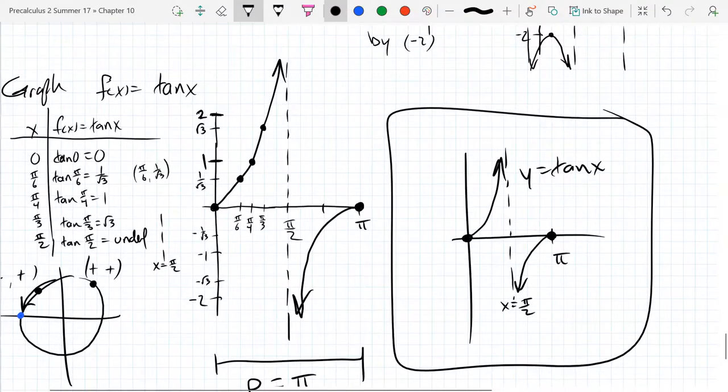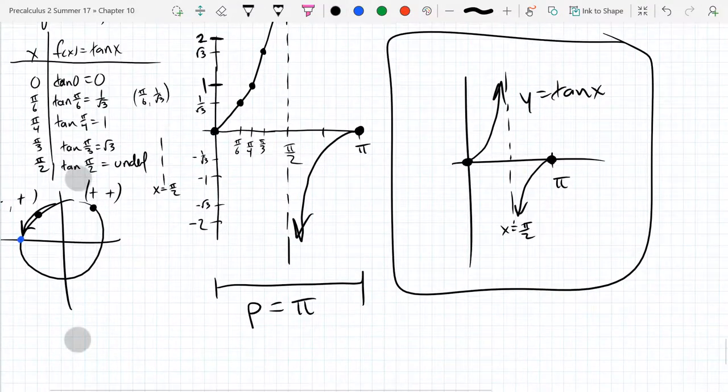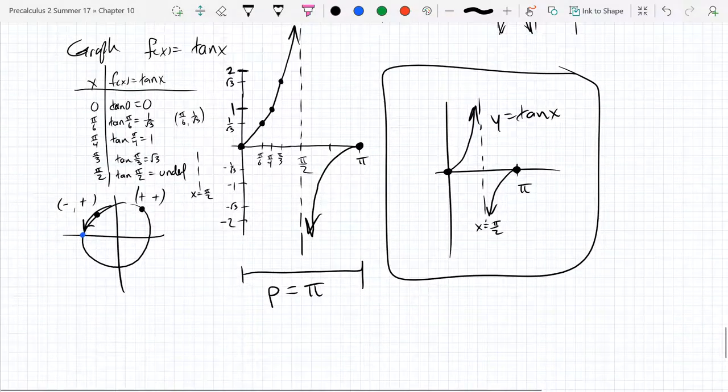So next up we're going to do cotangent. So we're going to take this graph and reciprocate it. And it's the same process we did before.